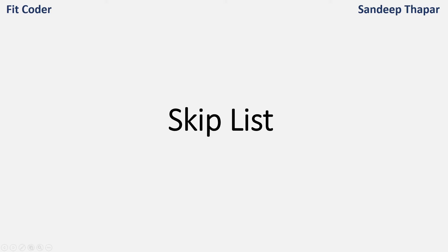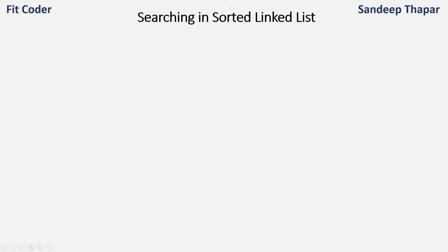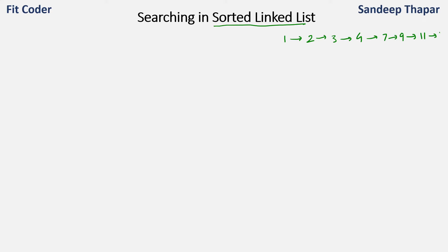In this video we'll discuss about skip list. Let's first understand why we need skip list. So let's say we are given a sorted linked list and we need to search in it. Although the linked list is sorted, to search in it we need to search all the nodes linearly, and linear search is O(n).